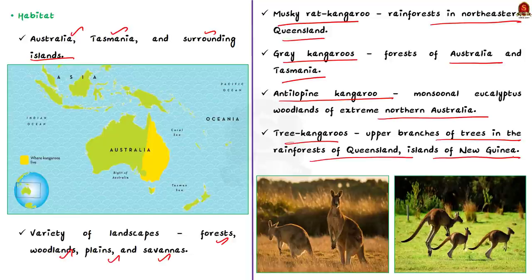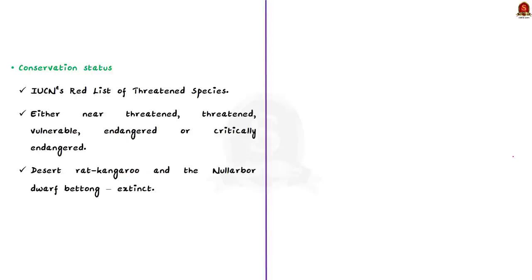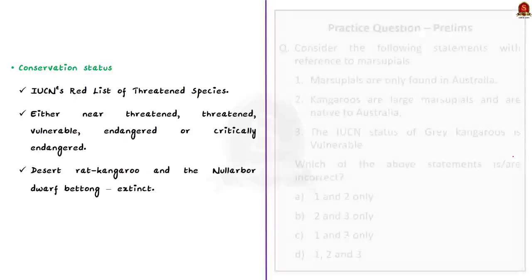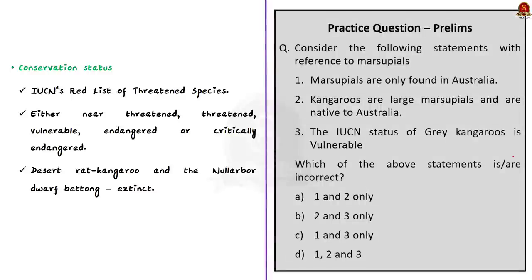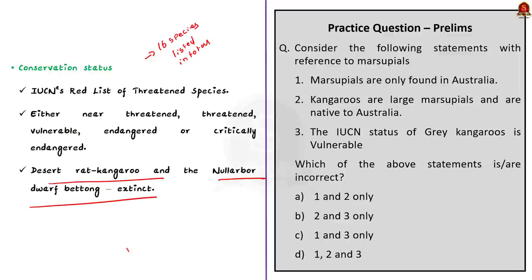According to IUCN's Red List of Threatened Species, 16 species of tree kangaroos and rat kangaroos are listed as either near threatened, threatened, vulnerable, endangered or critically endangered. The desert rat kangaroo and nullarbor dwarf bettong are considered extinct. In India, there is no provision for protection of kangaroos in the Wildlife Protection Act 1972 — think about why and post your answers in the comment section.